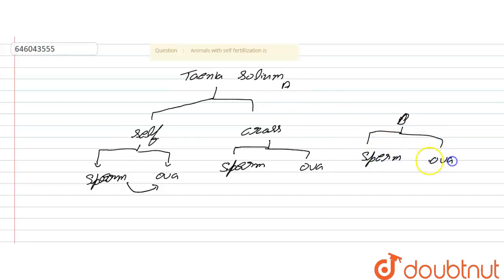This is cross fertilization. In self fertilization the sperm of the animal fused with its own ova, but in cross fertilization sperm of one animal fused with the ova of another animal of that species.